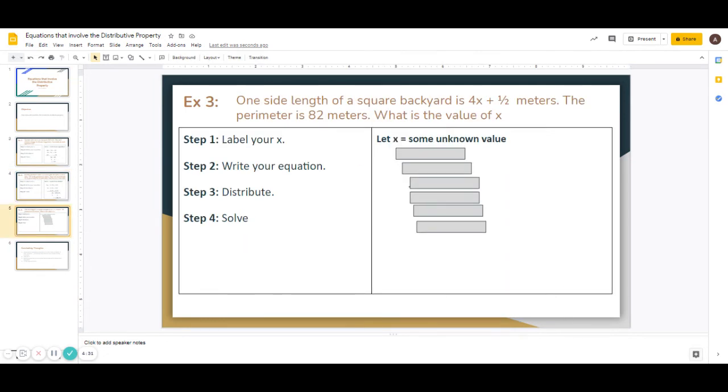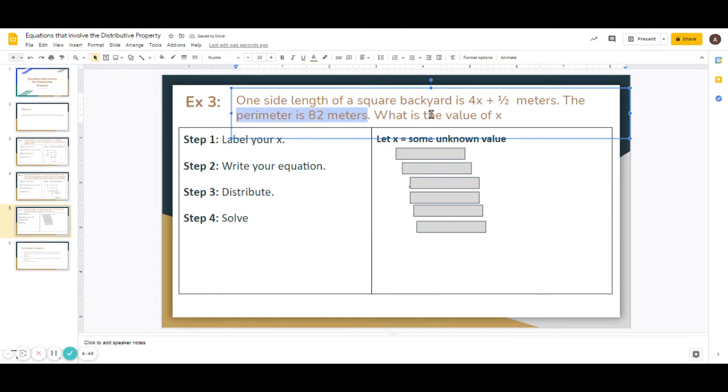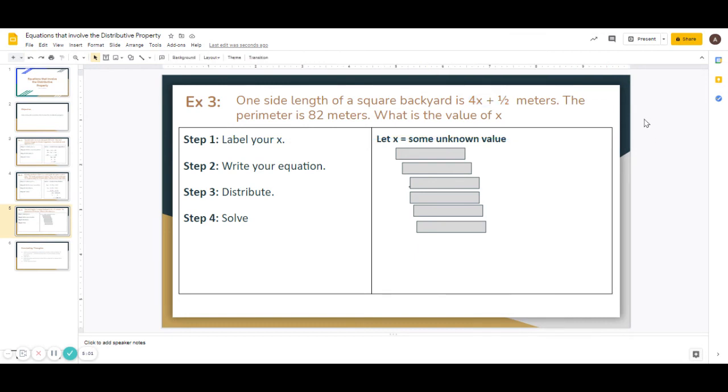And then example 3. We have one side length of a square backyard is 4x plus 1/2 meters. The perimeter is 82 meters. What is the value of x? The perimeter is 82 meters. This is your giveaway that you're going to multiply the one side by 4. So if you have a square backyard and all the sides are the same length, since it's a square, then you're going to multiply it by 4. So this is a pretty straightforward equation here. So we're going to say let x be some unknown value. We don't know what it is.